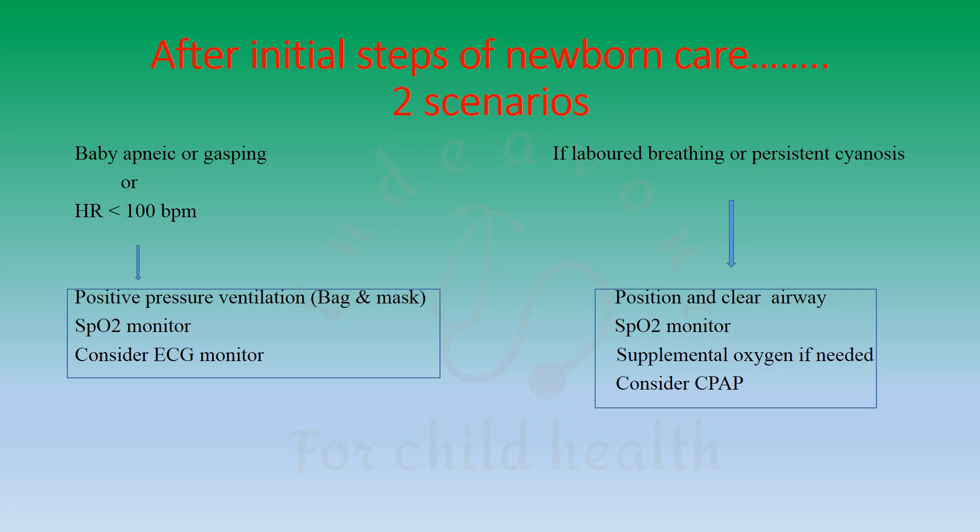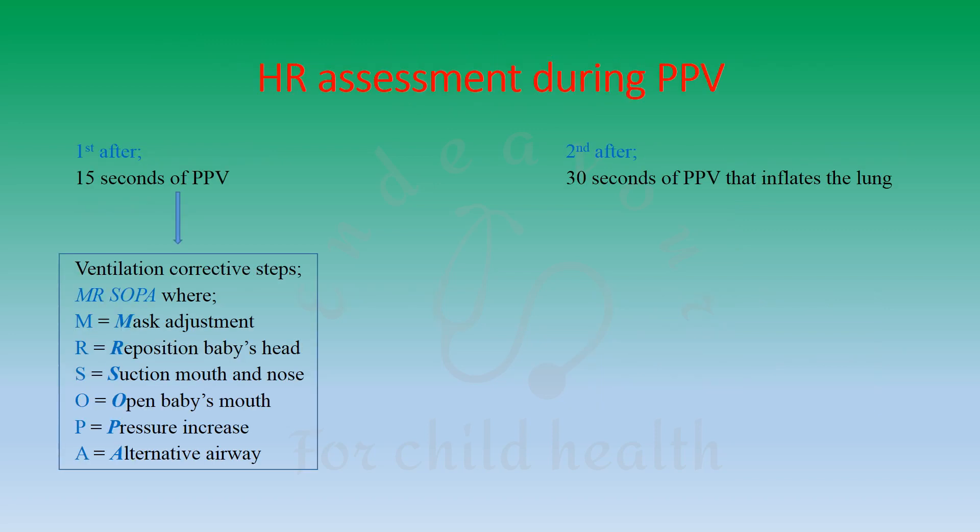If the baby has labored breathing or persistent cyanosis, you position the baby, clear the airway, attach the SpO2 monitor, provide supplemental oxygen if the SpO2 is not meeting the set criteria, and consider placing the baby on CPAP — continuous positive airway pressure.